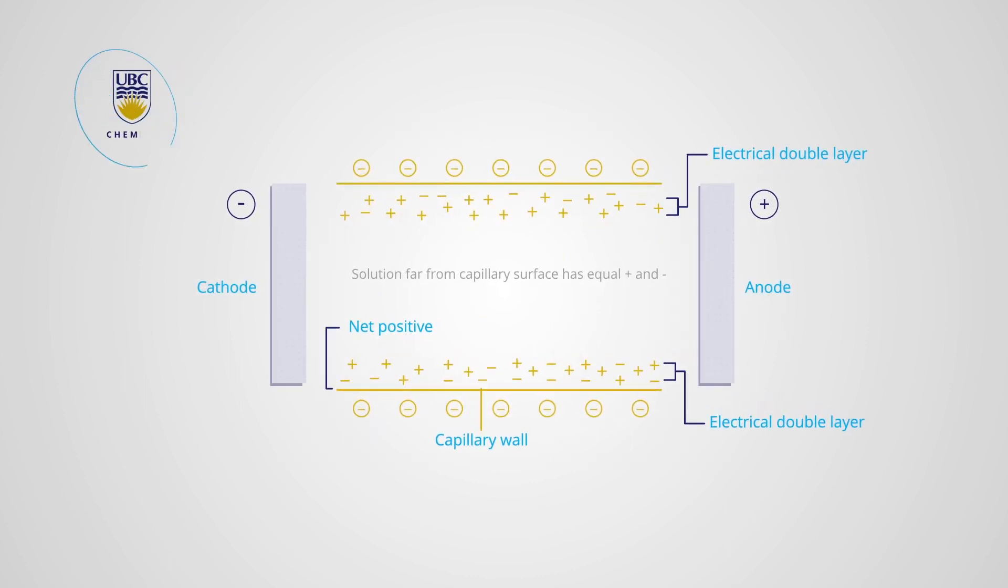For a negatively charged capillary wall, cations from the buffer solution are attracted to it, thus forming an electrical double layer. The double layer contains more cations than anions in order to neutralize the negative charge of the wall.